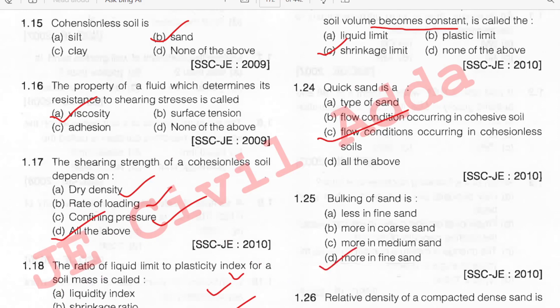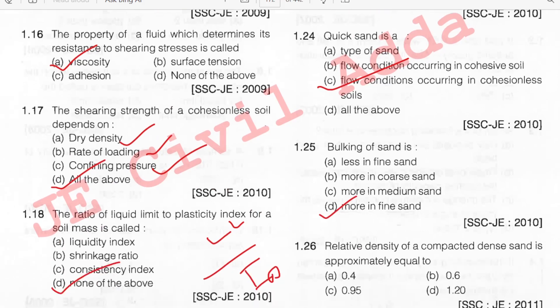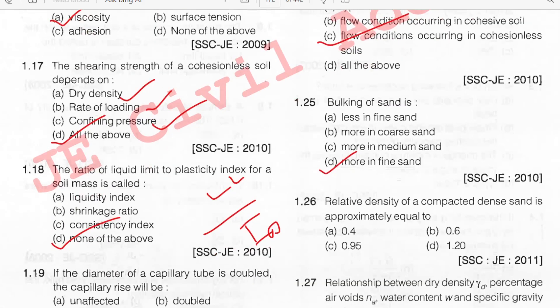Relative density of a compacted dense sand is approximately equal to 0.95.